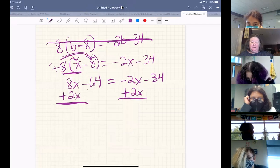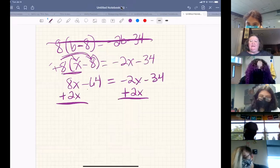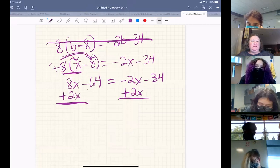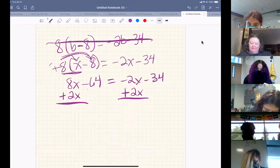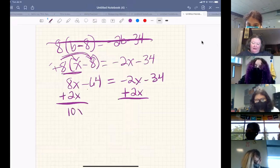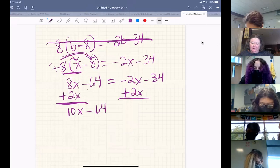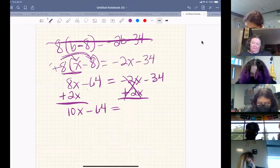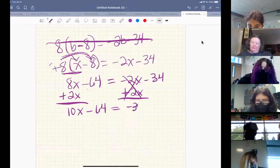So I'm going to pick the 2X and add it. I could have done either one of them, but I like the 2X because it's negative in the problem and to move it to the other side, I can make it positive and I prefer working with positive. So on the left side of my equation, I'm going to get 10X - 64 equals, this got zeroed out, -34.